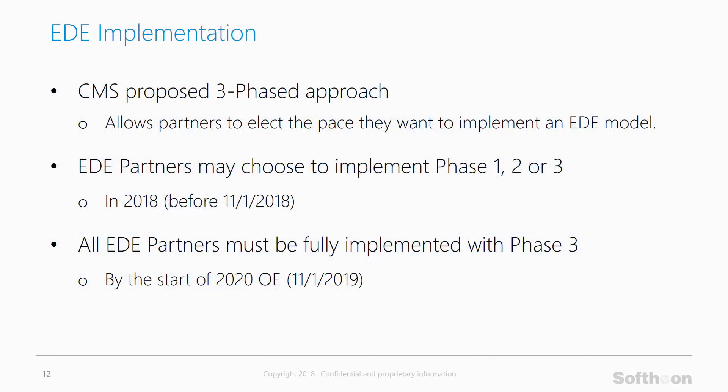The EDE implementation has been proposed as a three-phase approach, allowing each EDE partner to elect how quickly or slowly they want to implement the model. Carriers were required to select the specific phase they wanted to implement — phase one, two, or three. In 2018, the expectation is that by 2020 open enrollment, all EDE partners will have fully implemented all the way through phase three.